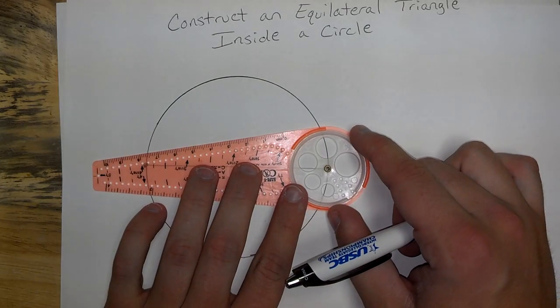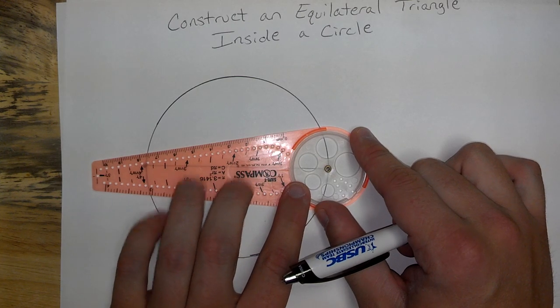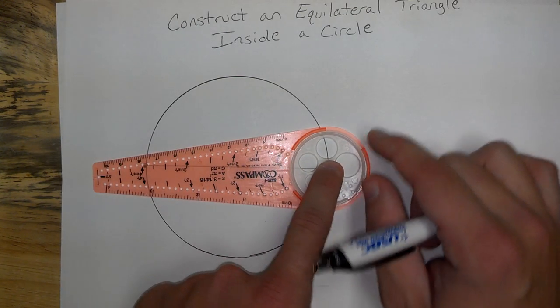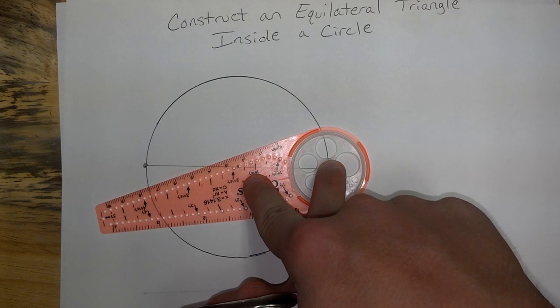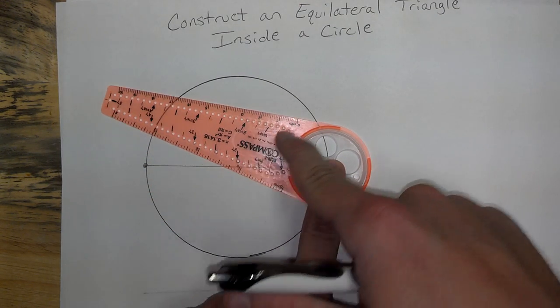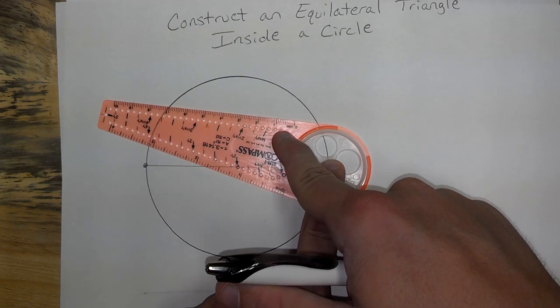So, right here, using the end point on your circle, go ahead and line up the brass ring of your compass. Now, find one of your holes that lines up with the center of our circle. Looks like, for me, it's going to be right there.